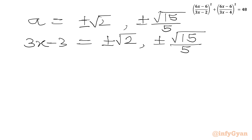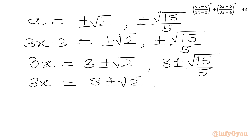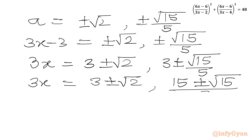Now we will add 3 to both sides. So 3x equals 3 plus or minus square root 2, and 3x equals 3 plus or minus square root 15 over 5. Dividing by 3, we get our final answers: x equals 1 plus or minus square root 2 over 3, and x equals 1 plus or minus square root 15 over 15.